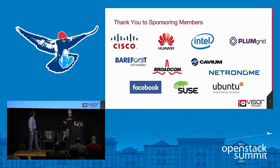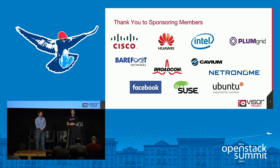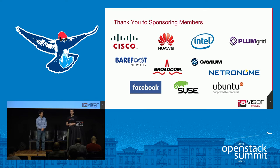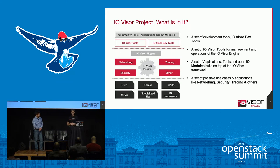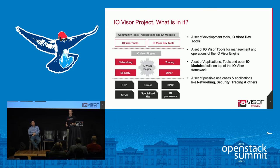We want to give a short thanks to our sponsoring members. We're both part of the IOVisor project, which is a Linux Foundation Collaborative project for enabling people to do IO. Today we'll give a little background on IOVisor, then focus on one application called XDP, and give a bit of use case. IOVisor is a community and a set of tools for doing a various set of things for high-performance IO.